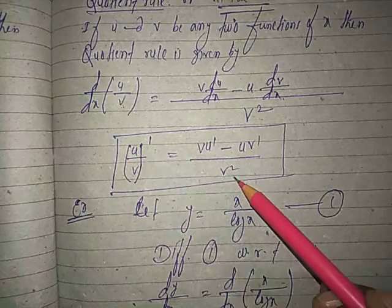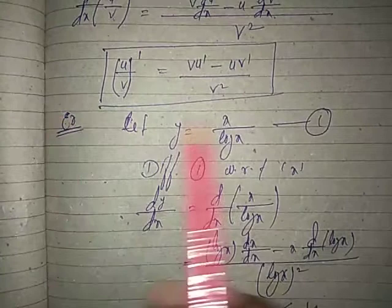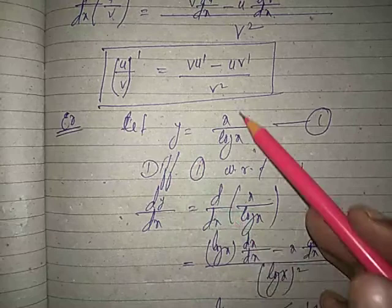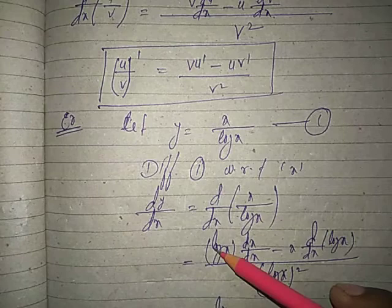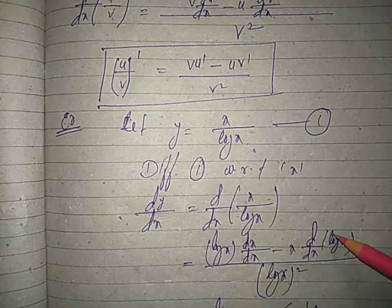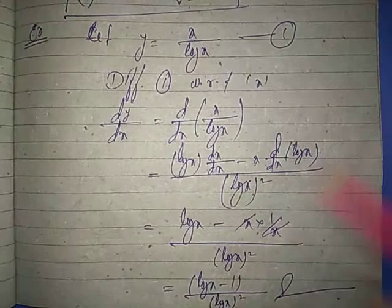Example: y equals x by log x, differentiate. d by dx on both sides. d by dx of u by v equals v square in denominator. v remains, differentiate u: d by dx of x is 1. Minus u remains, differentiate v: d by dx of log x is 1 by x.